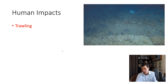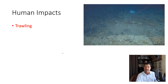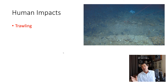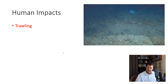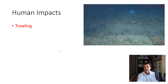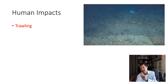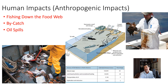One of the problems with deep water coral is they've been damaged greatly by trawling. Trawling occurs when you drag some kind of net or structure across the bottom to scrape up what's there — used in fishing or mining to get to the sediments. Trawling is a major impact for deep water coral. Since we're talking about damage that humans do, we call these anthropogenic impacts.